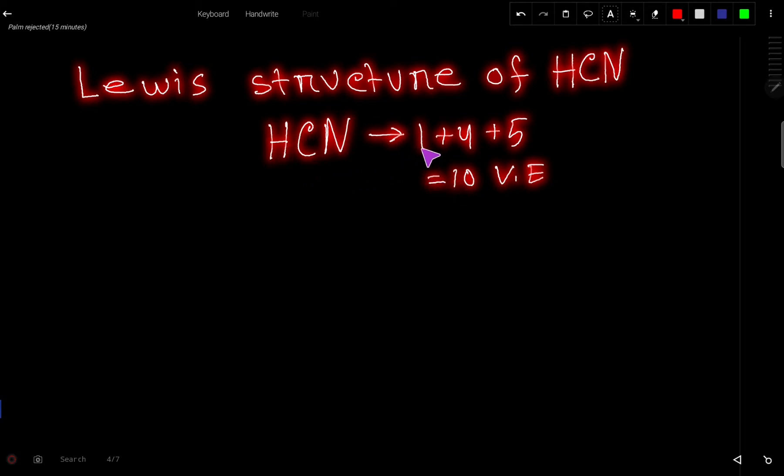Hydrogen has one valence electron because it is the element of group 1A. Carbon has four valence electrons because it is the element of group 4A. Nitrogen has five valence electrons because nitrogen is the element of group 5A. So total you are getting 10 valence electrons.